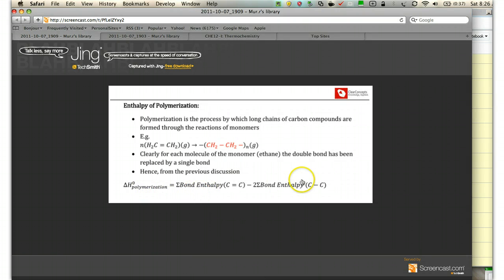And therefore, from the definition of enthalpy change using bond energies, which will be summation of bond energies of reactants minus summation of bond energies of products, what you need to consider is the products have two carbon-carbon single bonds, whereas the reactants had one carbon-carbon double bond, and that's where this 2 comes from.